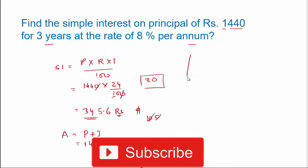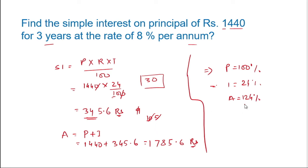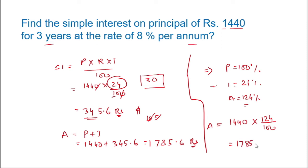We can also directly calculate the amount without first finding simple interest. Since the principal is 100 percent and the interest is R × T = 8 × 3 = 24 percent, the amount is 124 percent. So: Amount = (1440 × 124) / 100 = 1,785.6 rupees. This gives us the amount directly.